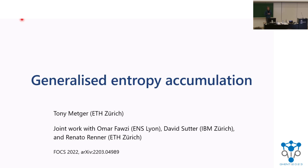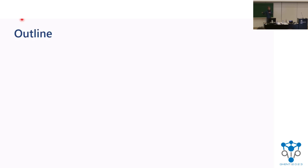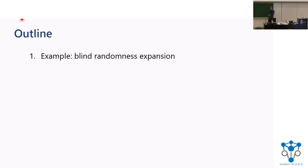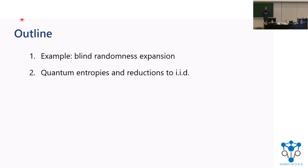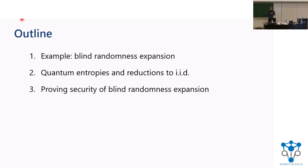For this talk, I'll focus on one particular quantum crypto application just for concreteness, and then we'll work our way towards the general theorem. The example I want to focus on is something called blind randomness expansion. We'll use this to motivate the necessary definitions of quantum entropies and something called a reduction to IID, and then we'll see what's required to prove security of this protocol, which will lead us to this general theorem.